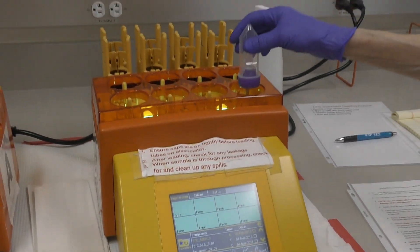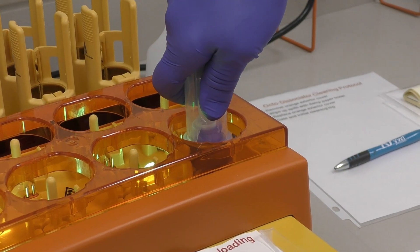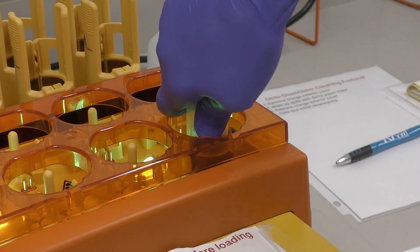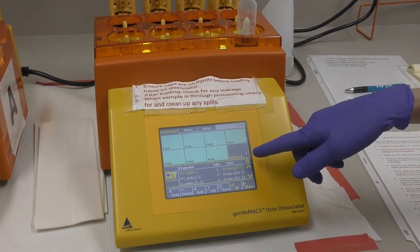Next, place your tube in any slot. Push straight down until it clicks. It will show on the screen as selected.